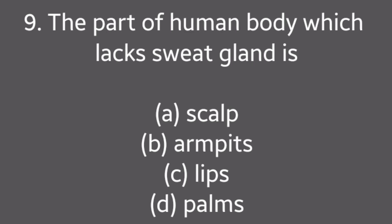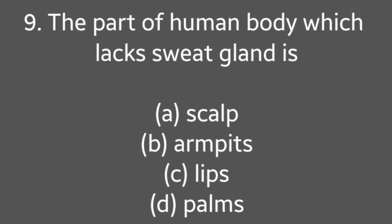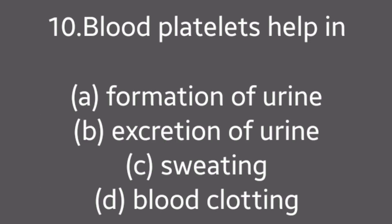Question No. 9: The part of the human body which lacks sweat glands is — Scab, Armpits, Lips, Palms. Answer is Option C: Lips.